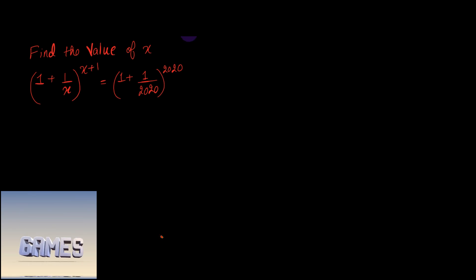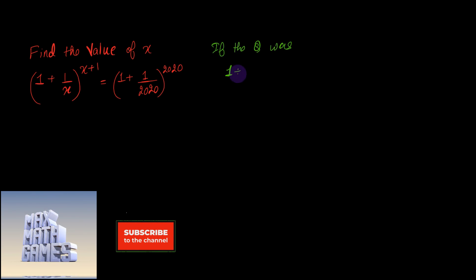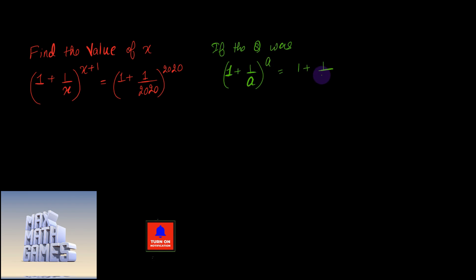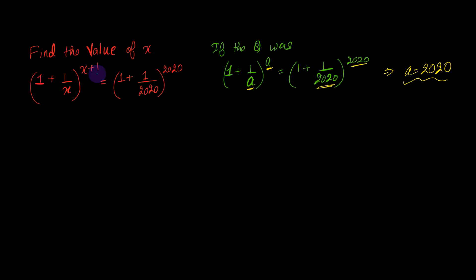Alright, so now let us check out the solution. If the question was (1 + 1/a)^a = (1 + 1/2020)^2020, then the question would have been much simpler — we would simply write that a = 2020 and that would be the answer. But this is not the original question.